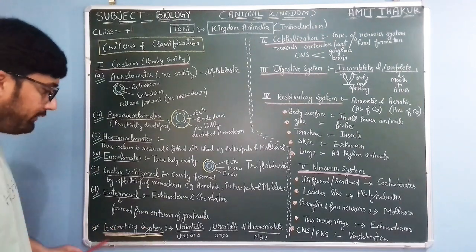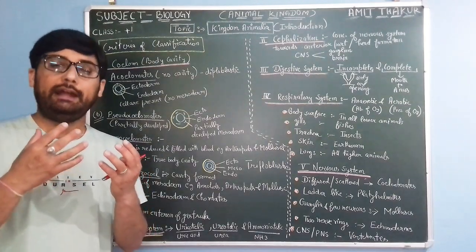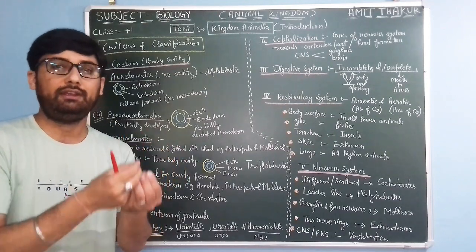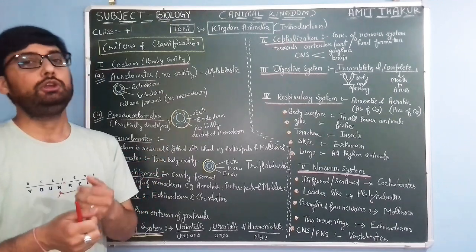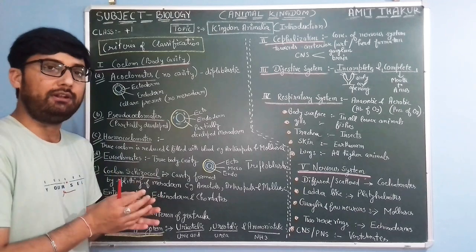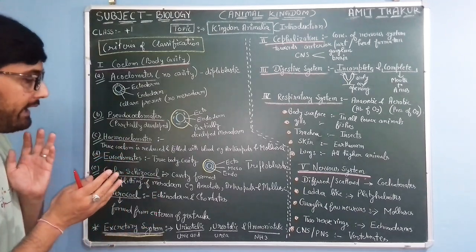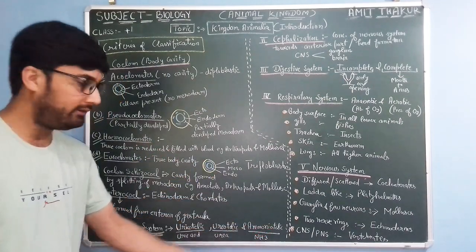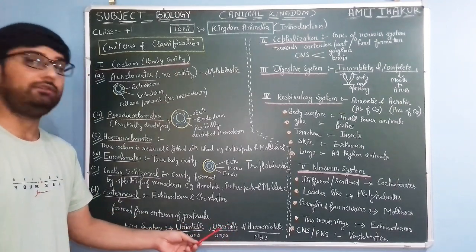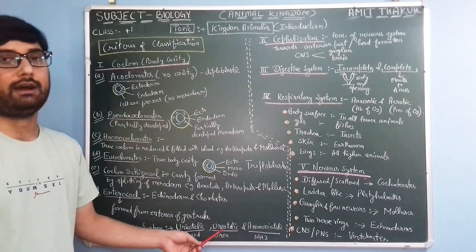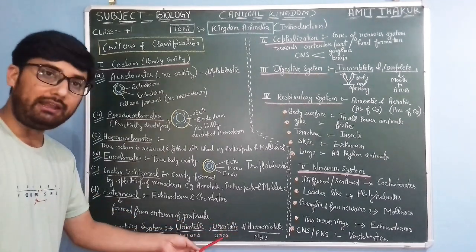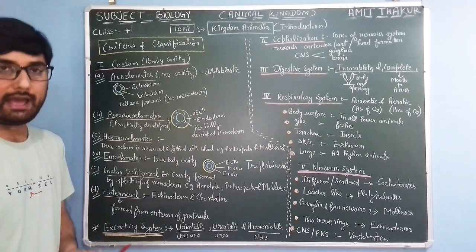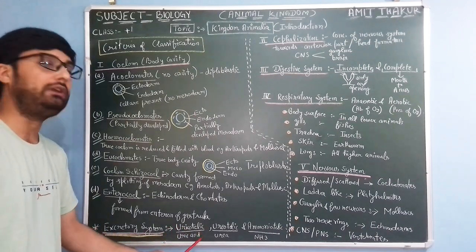Then the excretory system — excretory system means the expelling out of nitrogenous waste in the form of either ammonia, uric acid, or urea. Animals that expel nitrogenous waste in the form of ammonia are known as ammonotelic animals. If the excretory material is urea, like in human beings and higher animals, they are known as ureotelic. And if the nitrogenous excretory waste is uric acid, then these animals are known as uricotelic animals.